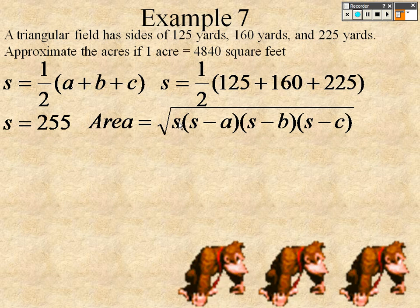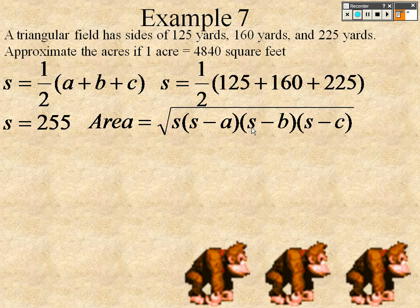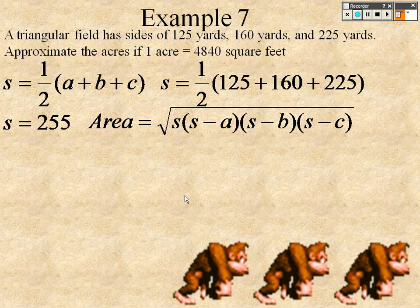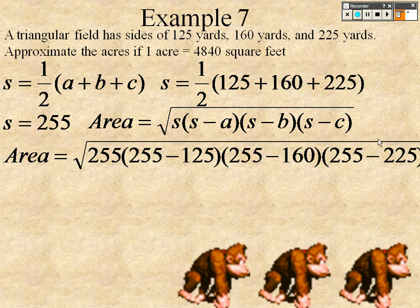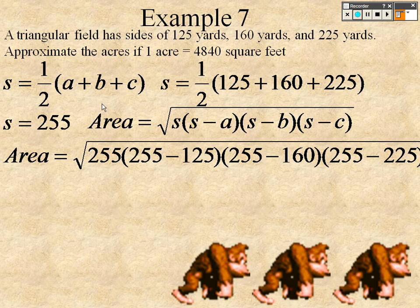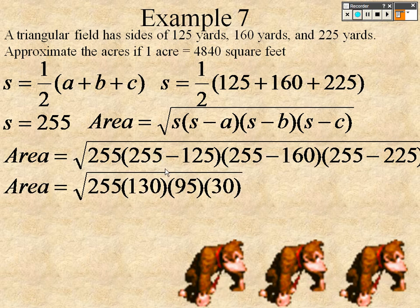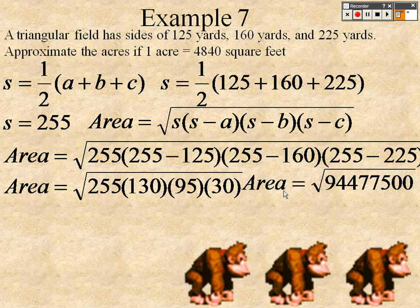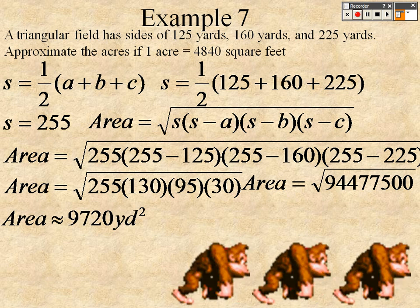Basically, it's 255 times 255 minus 125 times 255 minus 160 times 255 minus 225, and then you square root your answer. So all I did was plug in my S, plug in my A, plug in my B, plug in my C. This is all you're doing. This is literally plug and chug. It's about remembering the formula. So you end up getting 255 times 130 times 95 times 30. Multiply all that together and square root it, so you get about 9,720 yards squared.